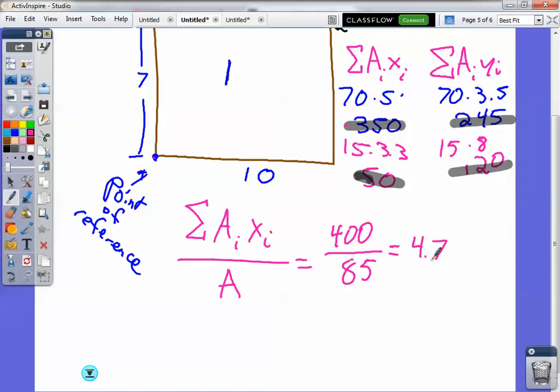Okay. And then let's do the same thing for the AY. So the sum of AᵢYᵢ divided by A, and then again, that's just achieved by adding these two numbers, right? So 245 and 120 is 365. And then we divide by the total area, which is 85, and that's going to be a little more than 4. I'm going to say 4.2. That's my guess. Someone's going to calculate that, and we'll correct it if you need it. I'm going to guess it's about 4.2.